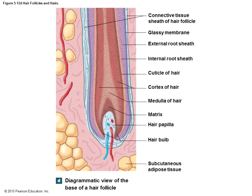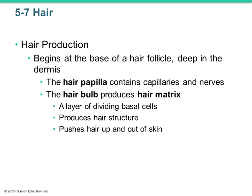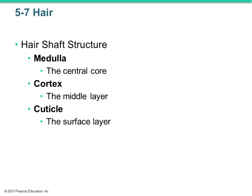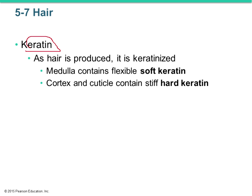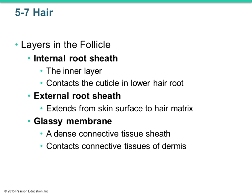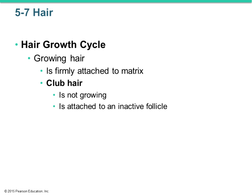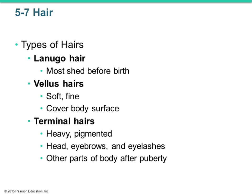Hair production begins deep in the hair follicle and divides just like our skin — pushing hair up and out of the skin. Keratin is the primary structure, both soft and hard keratin. There are three different types of hair: lanugo, vellus, and terminal. Lanugo is embryonic hair shed before birth.